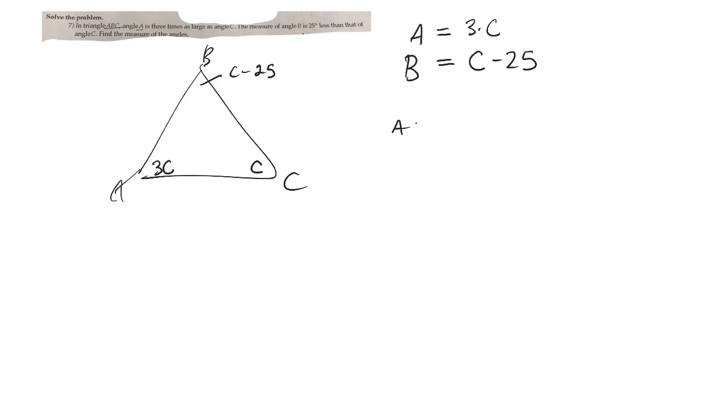But I know that the angles of a triangle all add up to 180. So if A is 3C, and B is C minus 25, and C is just C, now I've got an equation with all C's in it.